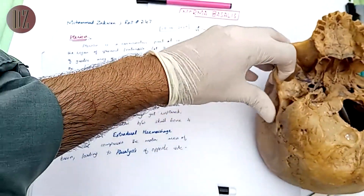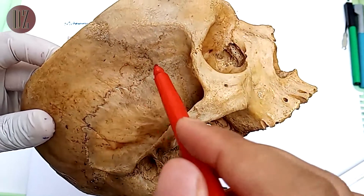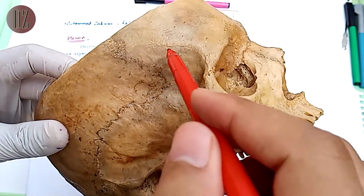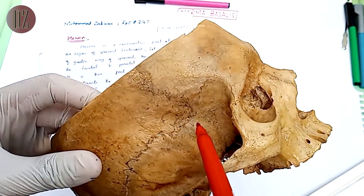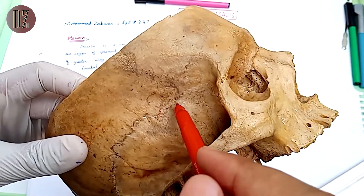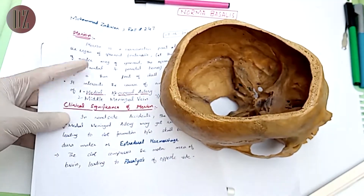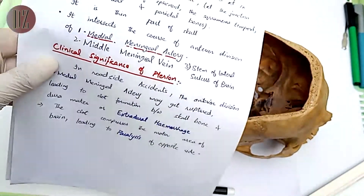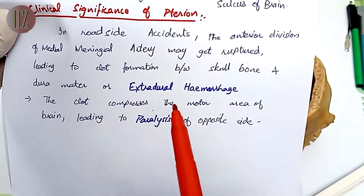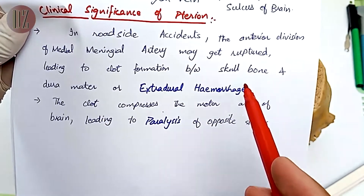This is the skull, and this point is called the pterion, at which the parietal bone, frontal bone, and temporal bone are meeting. This point is called the pterion, and it has very important clinical significance. In roadside accidents, the anterior division of the middle meningeal artery may get ruptured.